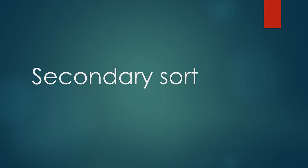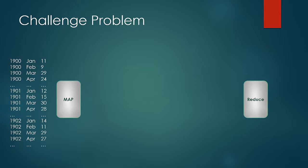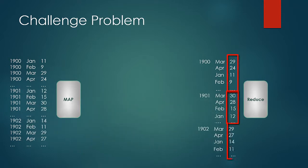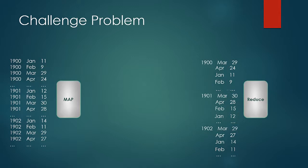Let us understand this with an example. Suppose we have an input record with year, month, and the maximum temperature recorded in that month. The ultimate objective of our problem is to feed the reducer with data in the form where records are arranged in descending order on the basis of temperature value. We can use this input feed at the reduce phase and design the reducer to emit just the first occurrence, which produces the output of the maximum temperature for that year.